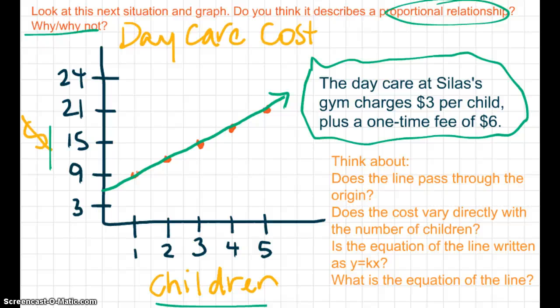So we have the number of children here and the dollars. So we can see that for one child, that would be $9. For two children, that would be $12 and so on. So I want you to look at this and decide, again,